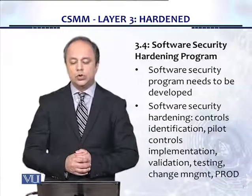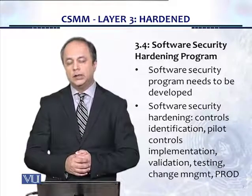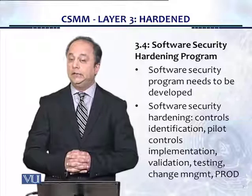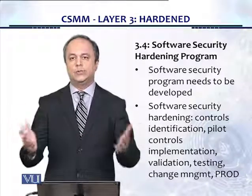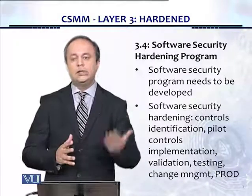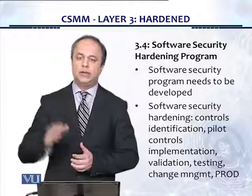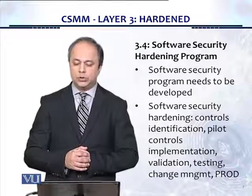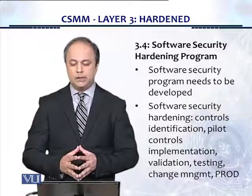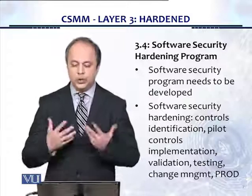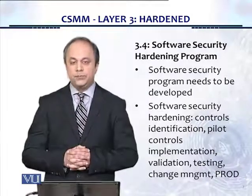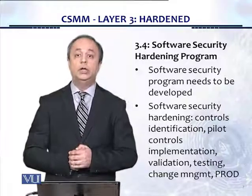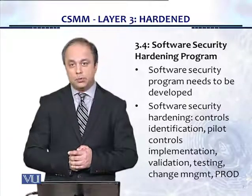The fourth control is the Software Security Hardening Program. We've talked about hardening of IT infrastructure — data center servers, routers, switches, Wi-Fi access points, databases, and all of that. But software developed either externally by a third party or internally by the organization also needs to be secured, and that is done through a Software Security Hardening Program. This program consists of control identification, pilot control implementation, validation, testing through manual or automated mechanisms, change management, and finally moving into production. This was covered in detail in an earlier chapter.